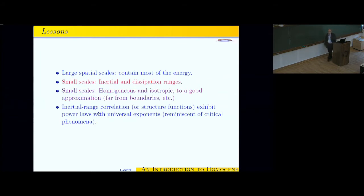Other lessons that are learned is that the large spatial scales, as you will see, these are the scales at which we inject energy into the system. They contain most of the energy. The small scales, known as the inertial and dissipation ranges, I will explain as we go along. At these small scales, the turbulence is homogeneous and isotropic, statistically speaking, to a good approximation if we stay far away from boundaries.